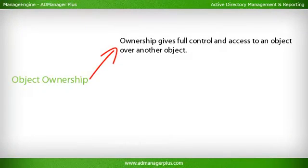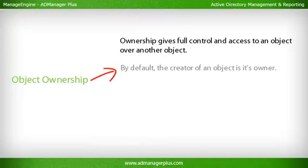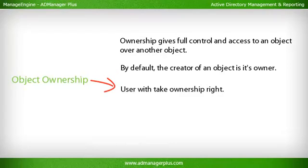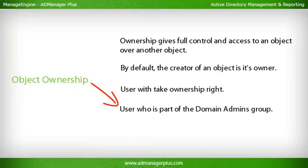Object Ownership gives full control and access to one object over another. For example, a user with full control over another object can view, edit, or delete the object's contents, properties, and permissions. By default, the creator of an object is its owner. Ownership can be granted or taken by a user that has the Take Ownership right or is part of the Domain Admins group.